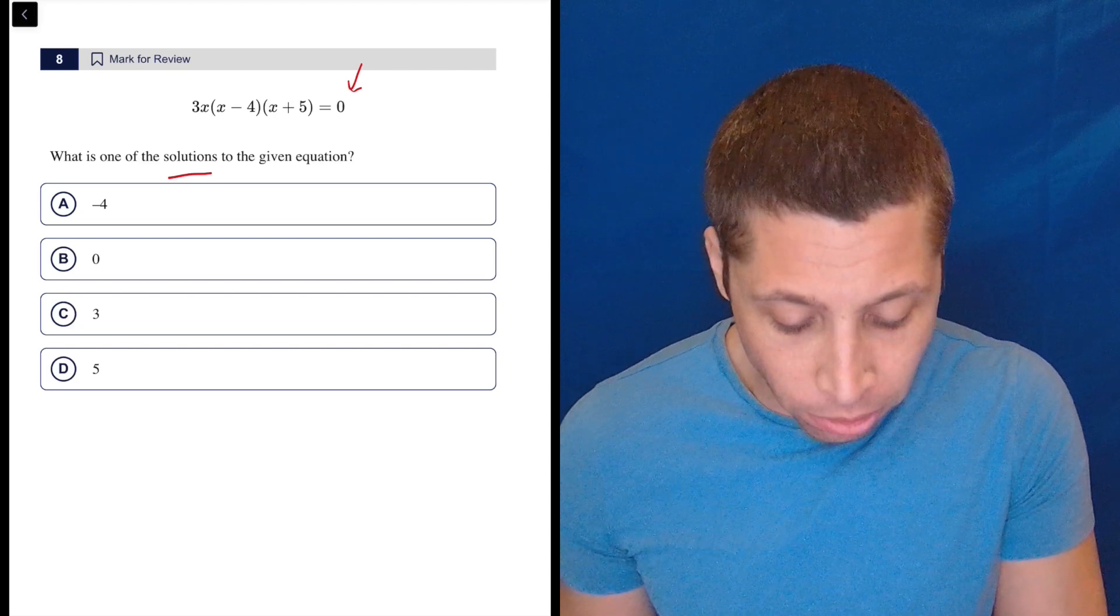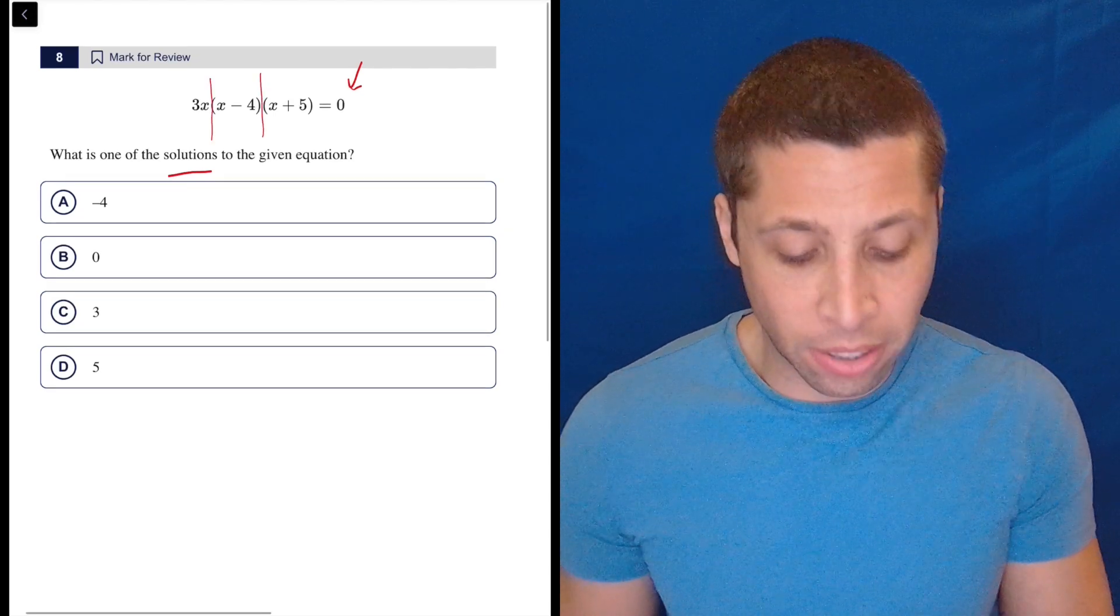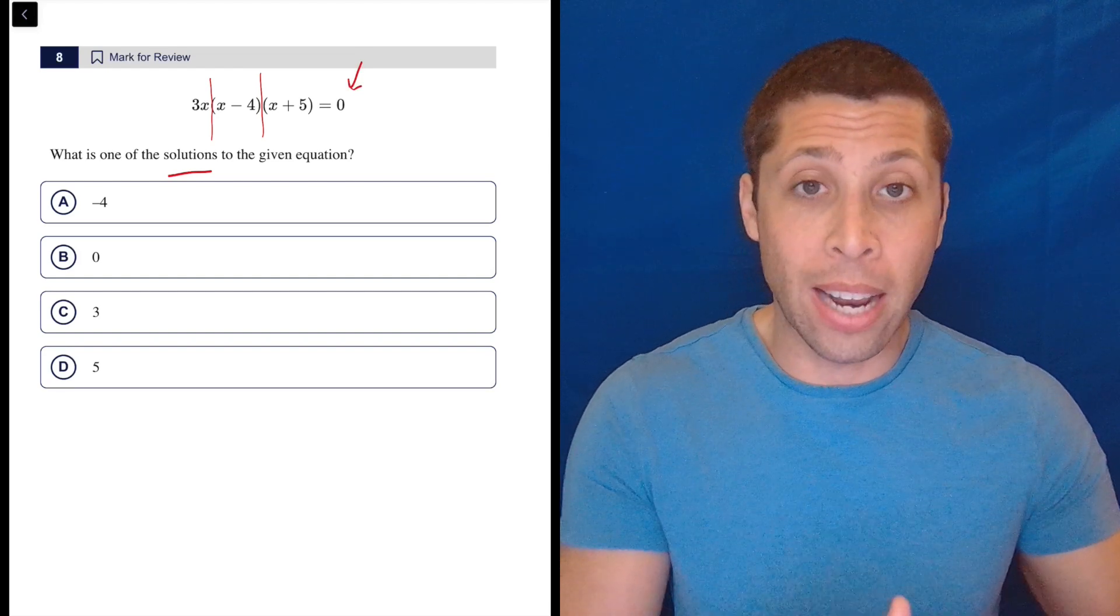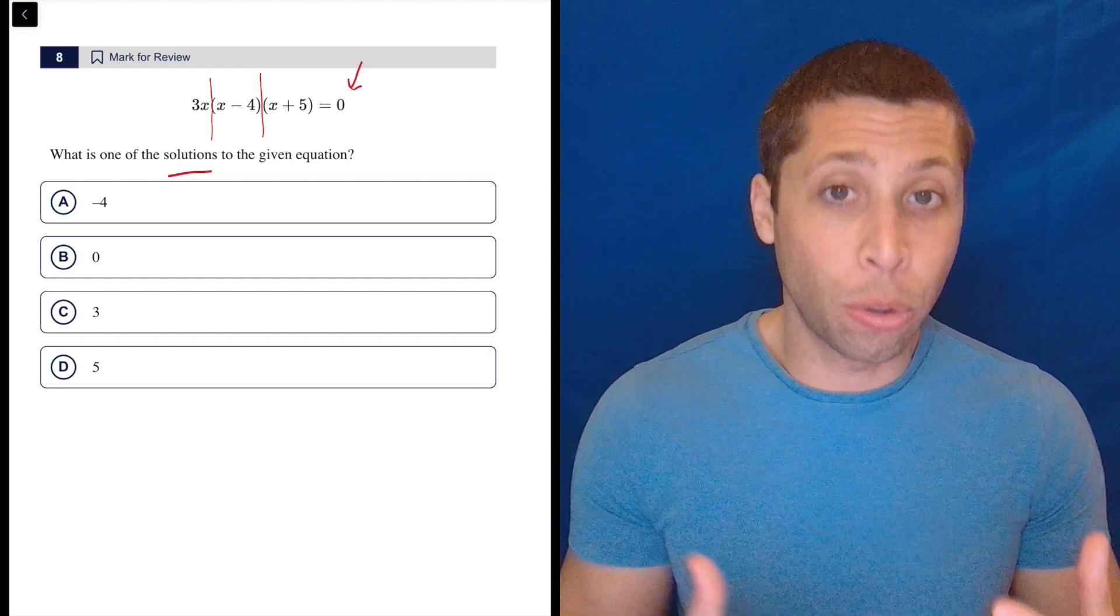So basically, we have three parts to this thing. I'm going to draw some lines to separate them. And because all those parts are multiplied, we are using the power of zero. It has some certain properties. We're using it to advantage.